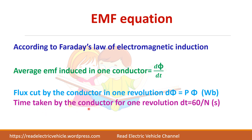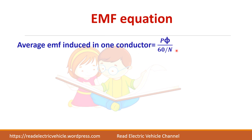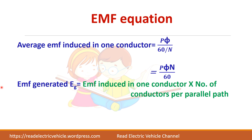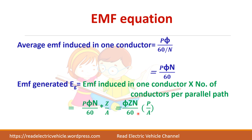dt is the time taken by the conductor for one revolution, which is 60 divided by N, where N is the speed of rotation — its unit is seconds. Substituting these two values, you will get P × φ divided by (60/N), which simplifies to Pφ N/60. The total EMF generated equals the EMF induced in one conductor multiplied by the number of conductors per parallel path, giving us EG = (φ × Z × N / 60) × (P / A).